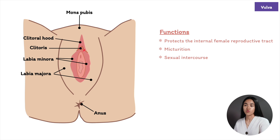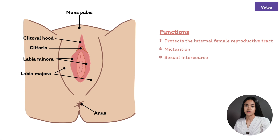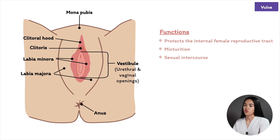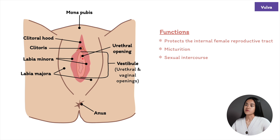The two labia minora skin folds form the hood of the clitoris. The clitoris is an erogenous organ that becomes engorged with blood during sexual stimulation. Similar to the male structure, it is composed of erectile tissue called corpora cavernosa that fills with blood during stimulation. The vestibule is the area protected by the labia minora and contains the opening of the vagina and the urethra.